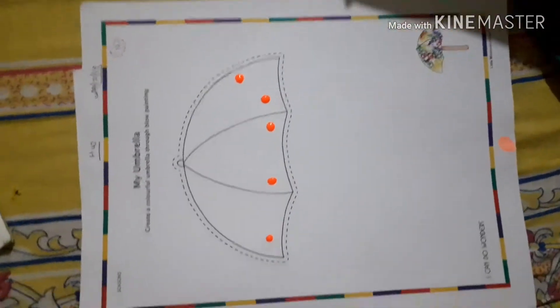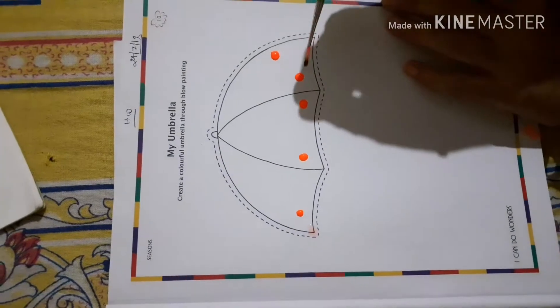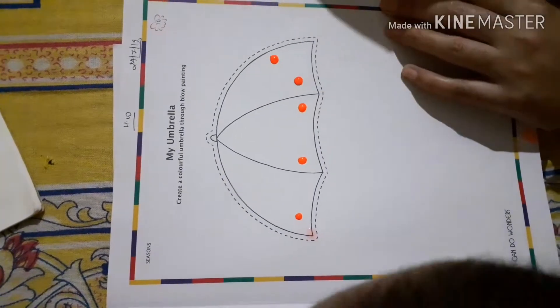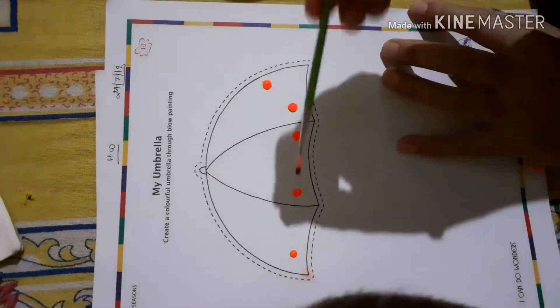So you have to make drops of water colors. After that you can add a little bit or a quarter drop of water on these drops, or you can go without water also. Like that.